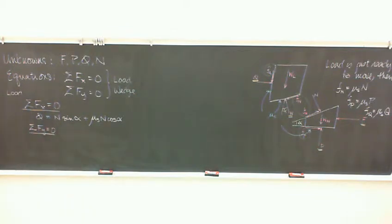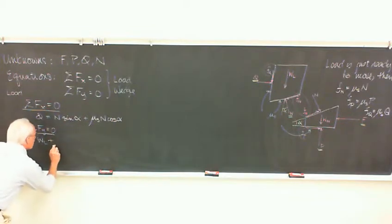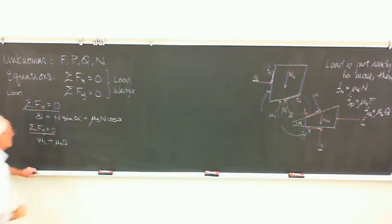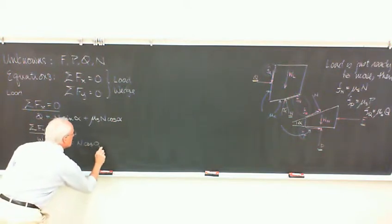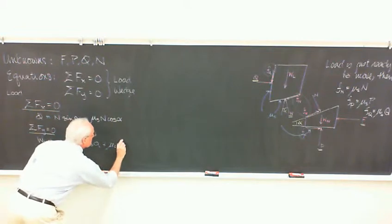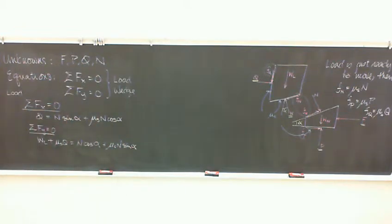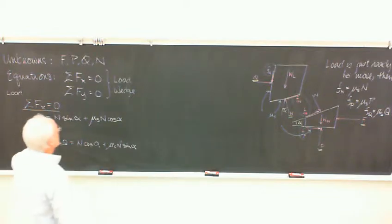And in the y direction, again for the load, we've got the weight itself down, which we take to be a known. Also, we've got the friction down. So, that will add on to the same side. And then we've got some of the normal force up and some of the friction up. So, it would be n cosine alpha up plus mu s n sine alpha on the upside. Look okay?